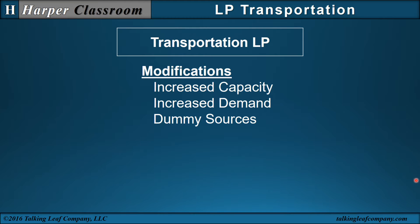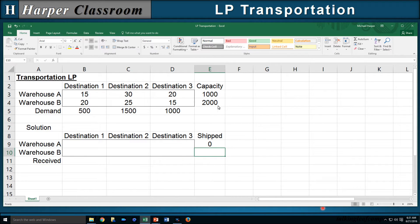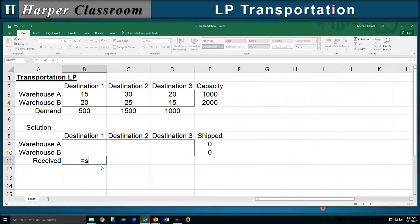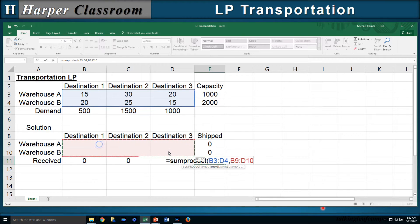I've already typed in the headings and the problem, so let's solve it. We have the sum of everything that's going to be shipped for A — copy that down. Everything received for Destination 1 — copy that over. Then the total cost, which will include the SUMPRODUCT of all the unit shipping costs times our decision variables.